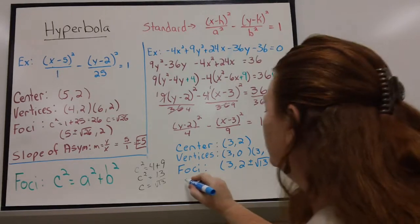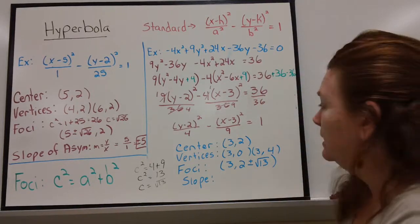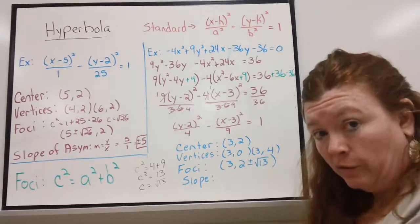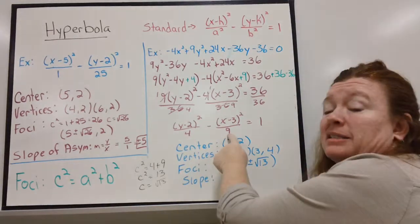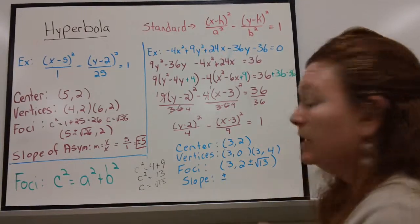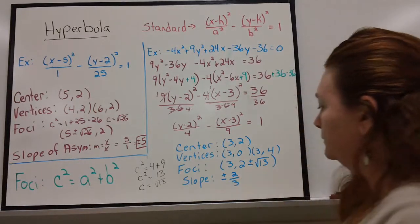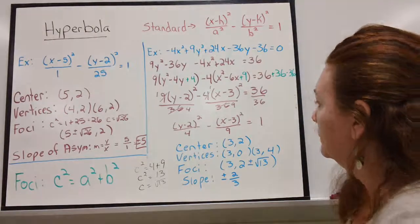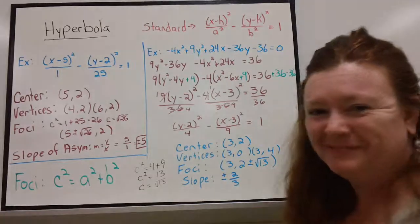And then finally, the slope of my asymptotes. I'm hoping this one's kind of easy. Remember, it's the y's over the x's. Rise over run. The y distance is 2. The x distance is 3. I have a positive and a negative slope. That would be 2 over 3. And there you go. That's a hyperbola. Good luck, and I hope this helped clarify. Alright.